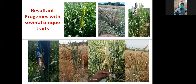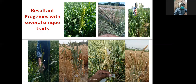Interestingly, we observed several unique traits among the progeny, as you can see here. Here is a compact spikelet, here is a branched spikelet, and here is a tall plant. You can also see a branched spikelet head here, as well as stay-green characters.